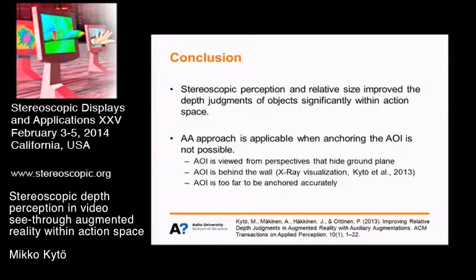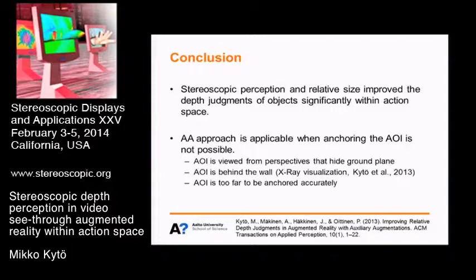This is the case, for example, when the area of interest is viewed from perspectives that hide the ground plane — such as through windows or where the ground is not visible — or when the augmented object of interest is behind a wall, which a previous study has shown this approach to be very useful for. Also, in situations where the area of interest is too far to be accurately anchored — since many depth cues decrease in accuracy as a function of depth — positioning the auxiliary augmentation nearby allows the observer to deduce the position of a far area of interest using relative depth cues.